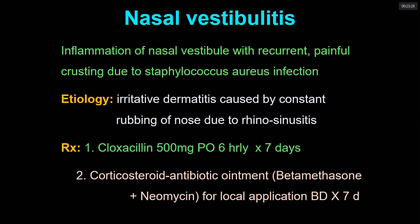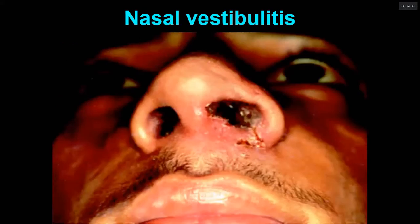Nasal vestibulitis is inflammation of the nasal vestibule with recurrent painful crusting due to Staphylococcus aureus infection. It also occurs as an irritative dermatitis caused by constant rubbing of the nose due to rhinosinusitis. Treatment is essentially the same: flucloxacillin 500 mg six-hourly for seven days, and antibiotic with topical steroid applied locally twice or thrice a day for seven days.